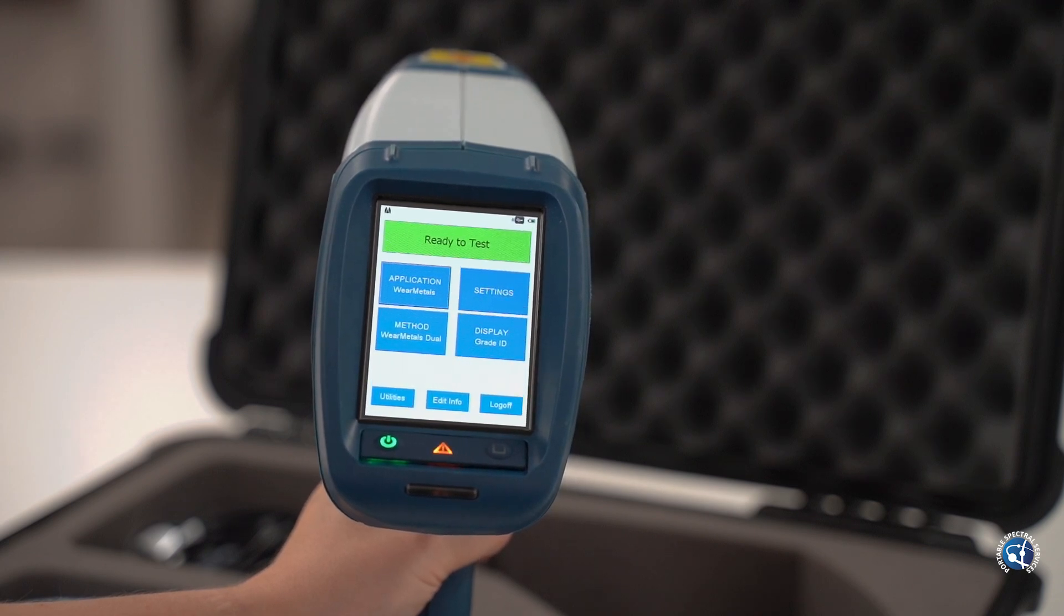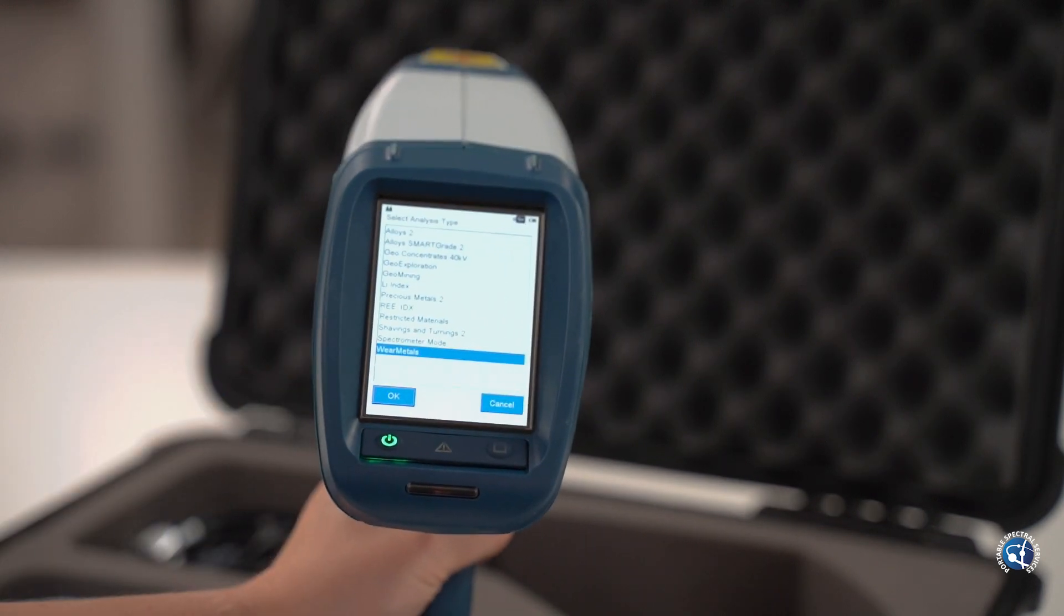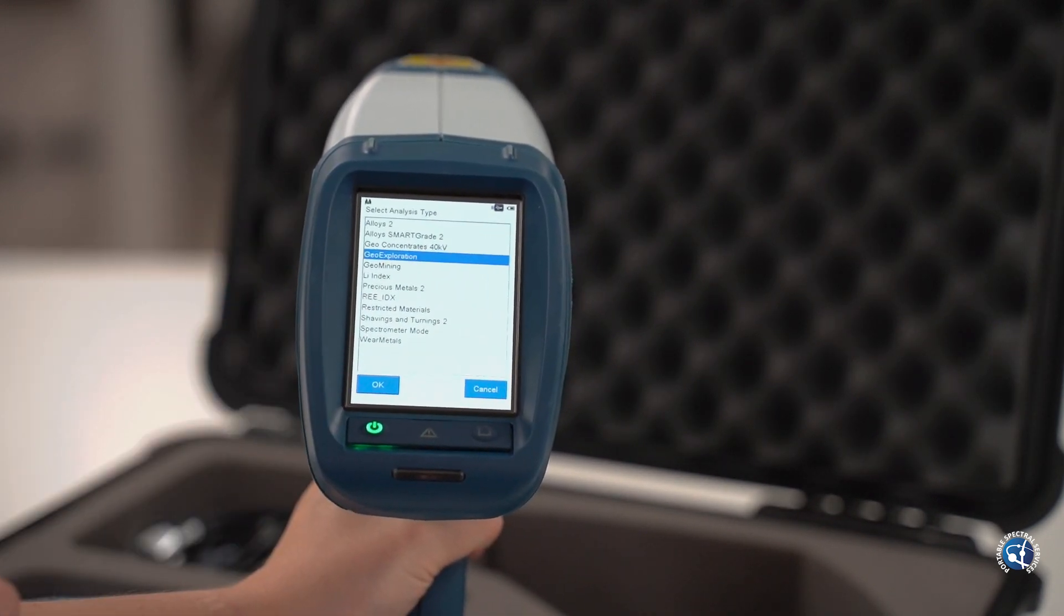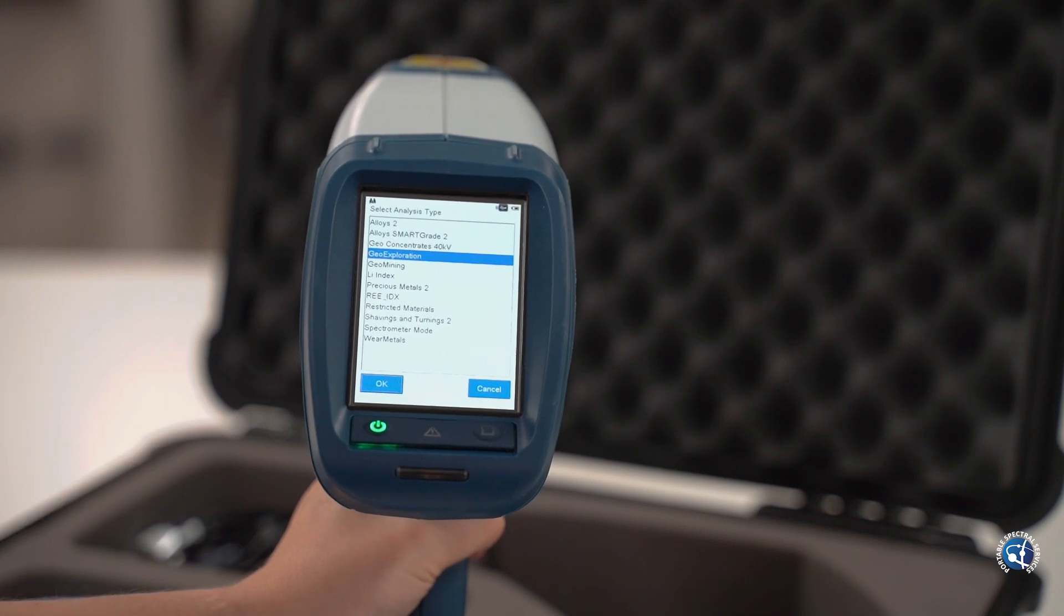To do this you go into application, click on the calibration type you want and confirm by pressing OK. This will then take you back to the home page.